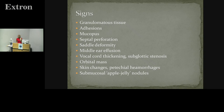We're looking for signs of granulomatous tissue: abnormal mucosa in the nose, adhesions and scarring, mucopus coming from the sinuses, a septal perforation with unhealthy edges and no other attributable cause, saddle deformity, middle ear disease or middle ear effusion, vocal cord thickening, and sometimes a subglottic stenosis. They can also have orbital pseudotumours, so proptosis or visual signs. Look at their nails for evidence of petechial haemorrhage — other things that might point you toward a granulomatous condition.